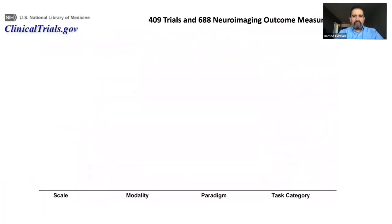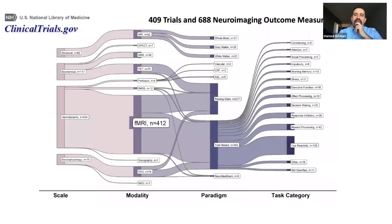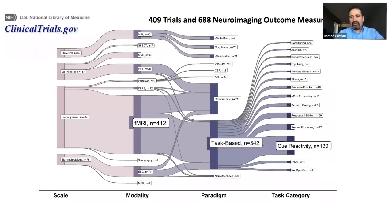If I want to divide those trials based on the outcome measures they are using in terms of scale, modality, paradigm, and task category, fMRI is the dominant measure that people are using. Within fMRI, task-based fMRI, and among task-based fMRI, cue reactivity activity is the most frequent paradigm — the most frequent neuroimaging marker we are already using in the field of addiction.